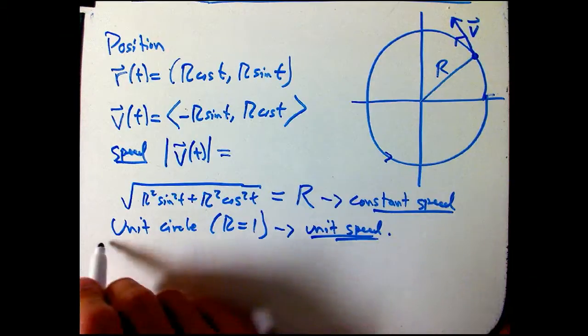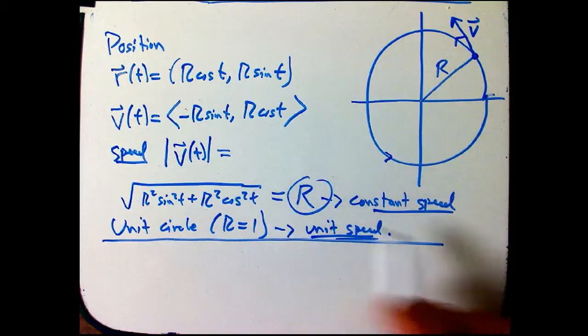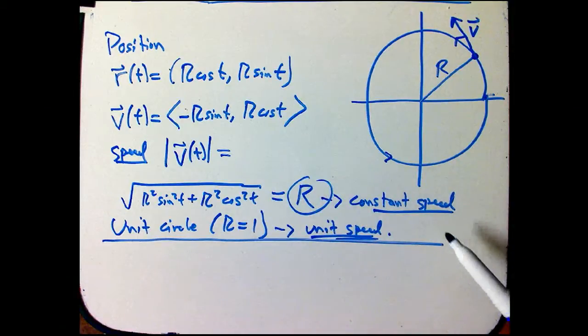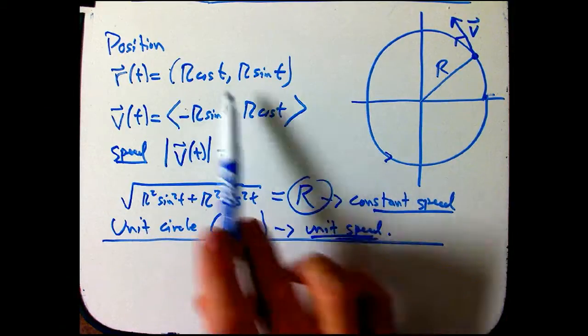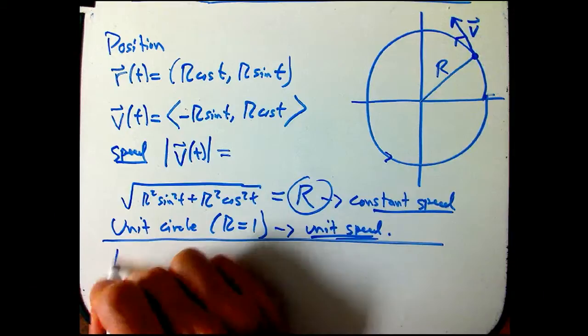But in general, the speed isn't going to be just 1. It'll be r in this case. And we'll see that for general curves, it's not even a constant. It's pretty obvious that this was very special, that the t all dropped out here. So let's talk about arc length.